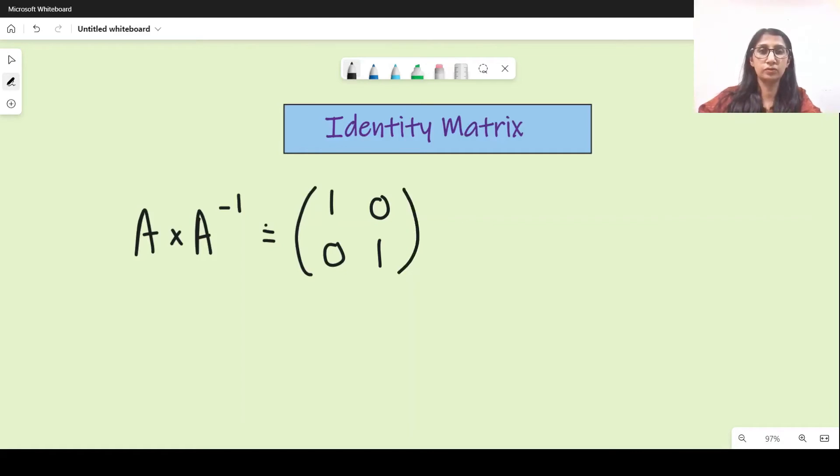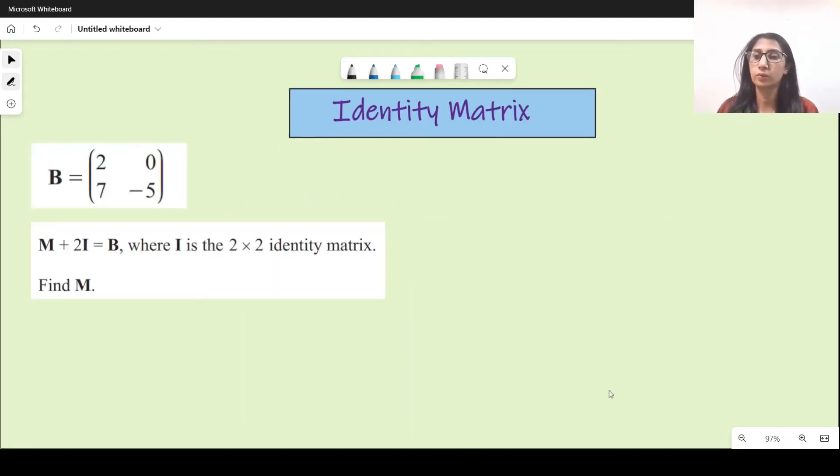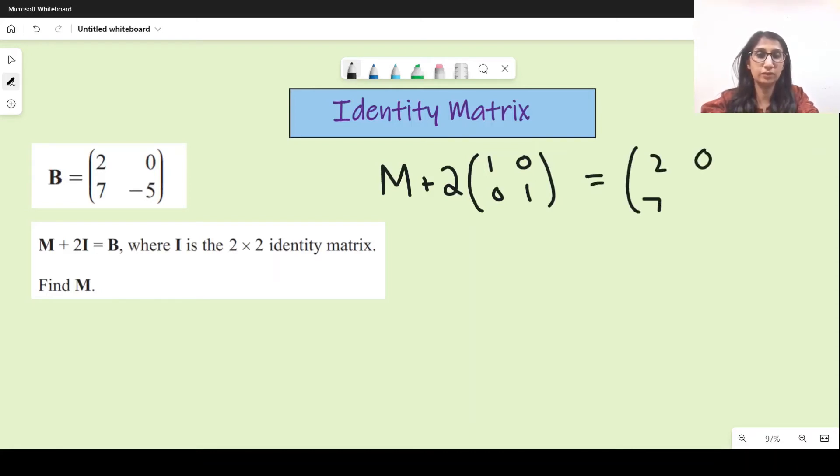Now let's do the past paper questions. Here's the question: there's matrix M that we need to find, plus two times identity matrix, which we know now is one one here and zero zero here. And this equals B, and B is also given in the question: two zero seven minus five.